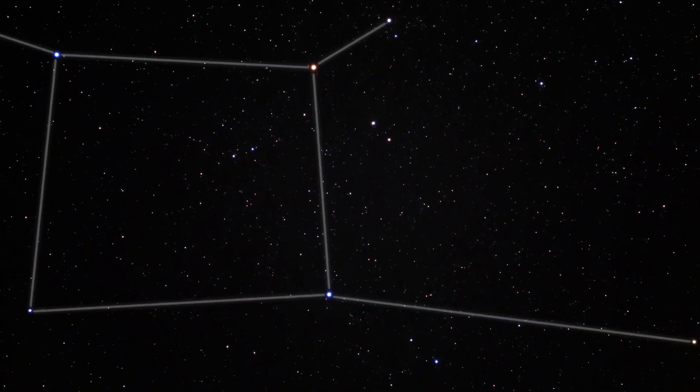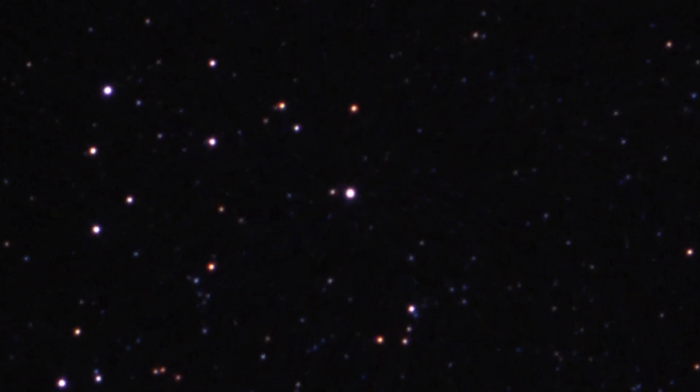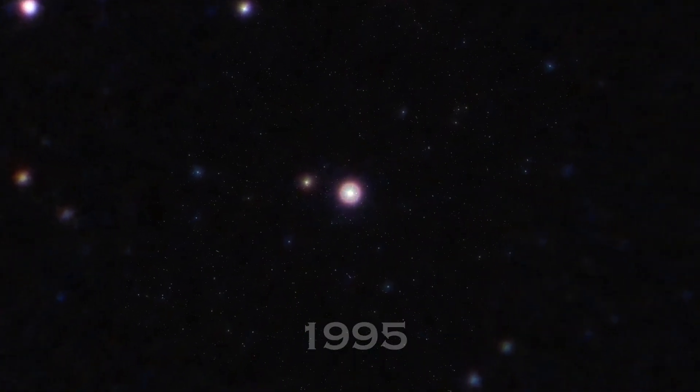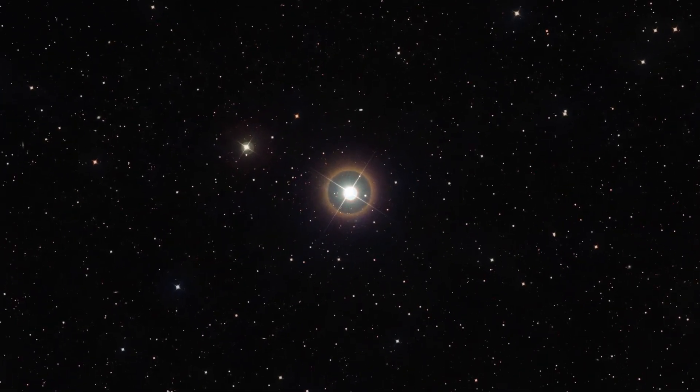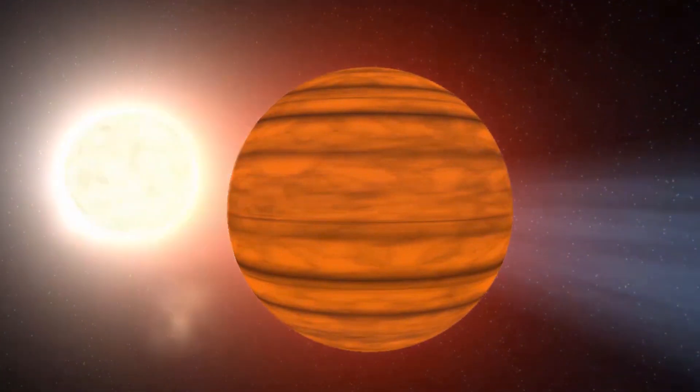The first exoplanet discovered was a hot gas giant, half the size of Jupiter, found in 1995. Its four-day orbit around its parent star made it pull so hard that cameras on Earth could see the star wobble.